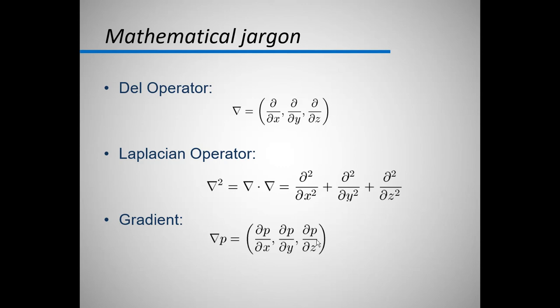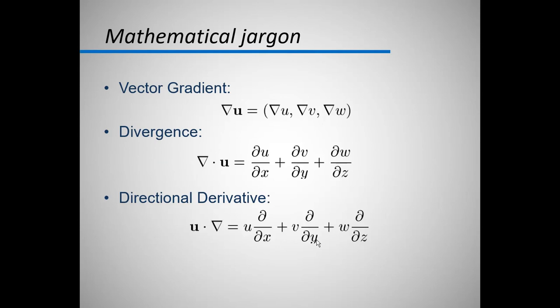And the gradient is expressed with along with the del operator here, which I have told you that the del operator is definitely used with some variable like pressure, velocity or temperature. Then vector gradient, vector gradient is obviously the gradient of a vector. Like in the above equation the pressure was mentioned, here the velocity is mentioned.